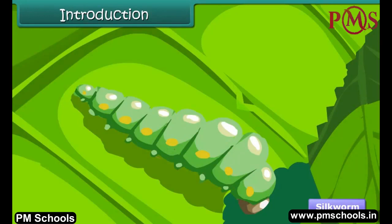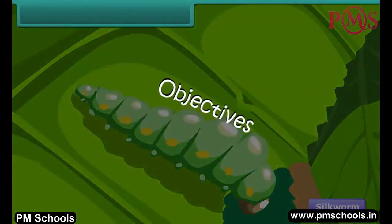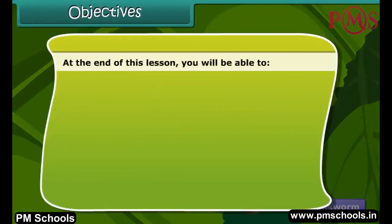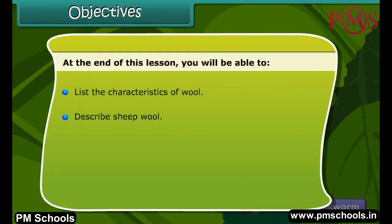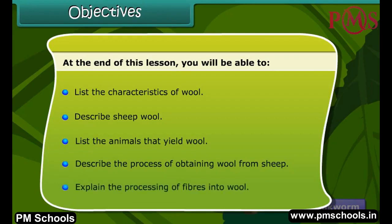In this lesson, we learn about an animal fiber — namely wool — in detail. At the end of this lesson, you will be able to list the characteristics of wool, describe sheep wool, list the animals that yield wool, describe the process of obtaining wool from sheep, and explain the processing of fibers into wool.